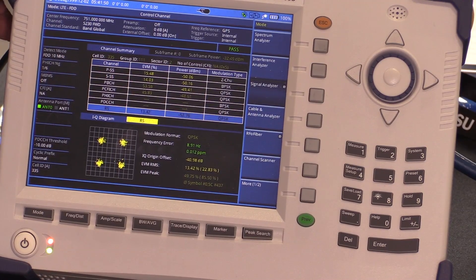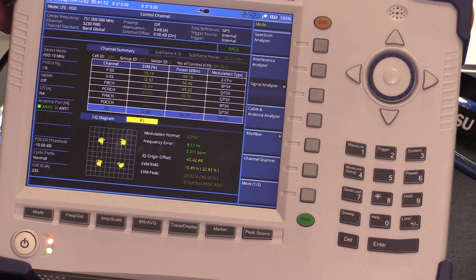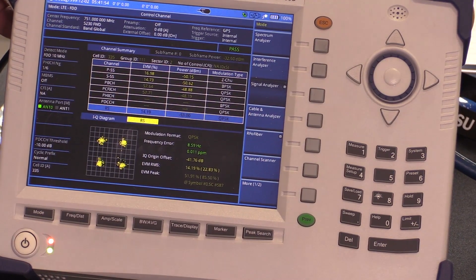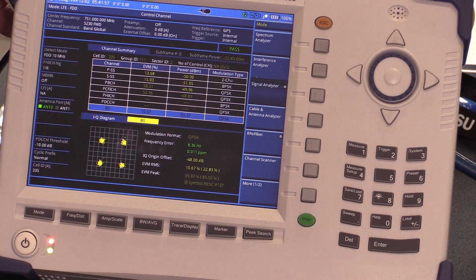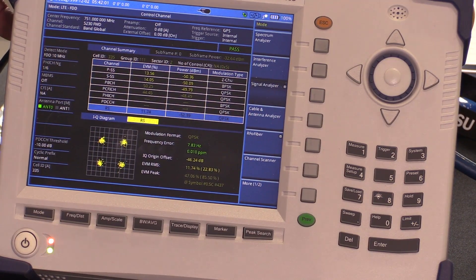In many of those radio heads, you don't have RF access. This allows you to connect into the optical link and see what's going on in the RF side of the base station.